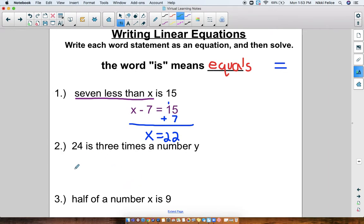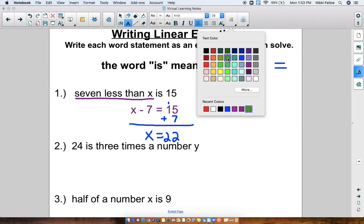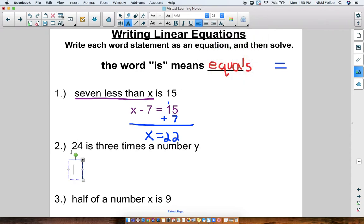In number 2, I have 24 is 3 times a number y. So, let's get started. 24 is. Actually, before I write, 24 is. What did we say the is means? Equals. So we can write 24 equals, equals what? 3 times a number y. So how do we write that multiplication? 3 times y. There's my equation. This equation is equivalent to this word sentence. 24 is 3 times a number y. 24 equals 3y.